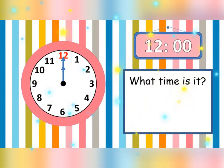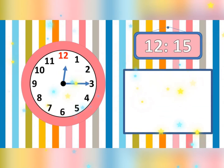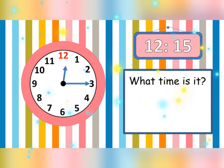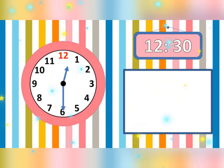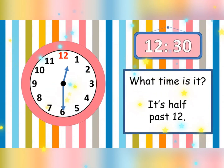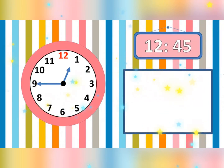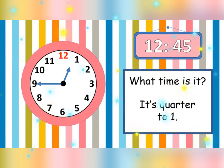What time is it? It is 12 o'clock. What time is it? It is quarter past 12. What time is it? It is half past 12. What time is it? It is quarter to 1.